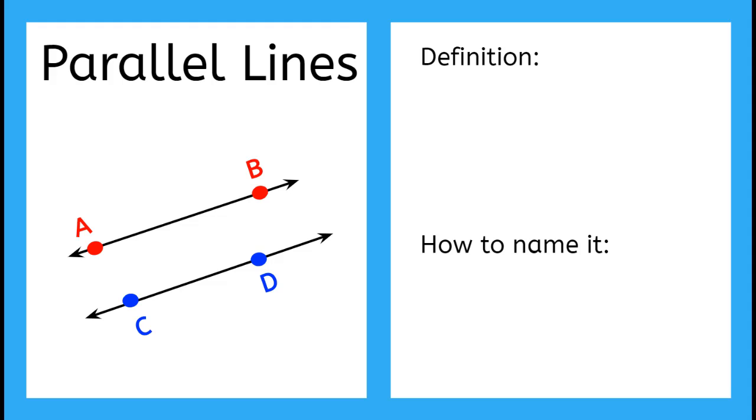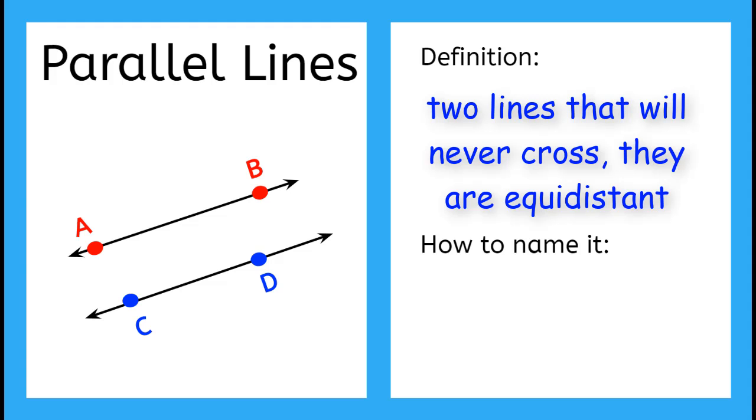Parallel lines are two lines that will never cross each other. They are equidistant apart. We can name parallel lines with the names of both lines and the symbol for parallel between them.